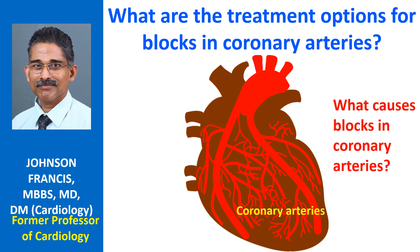A plaque with a thin outer covering and soft content can rupture due to the injury caused by the high velocity of blood flowing through the artery. A ruptured plaque exposes the inner layers of the artery. This raw area attracts blood cells called platelets, which adhere there in clumps.